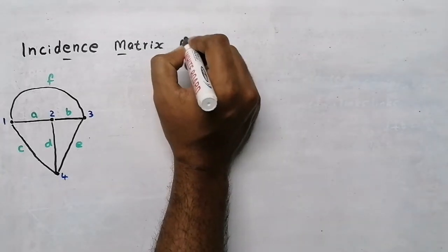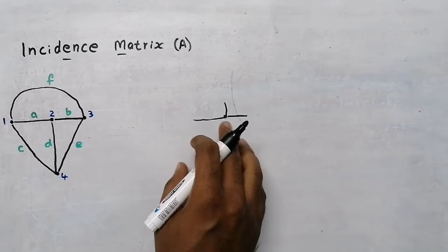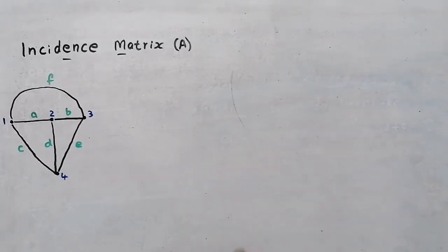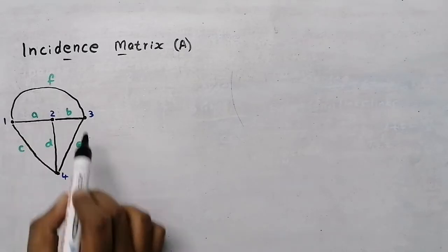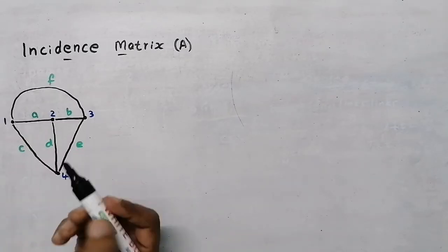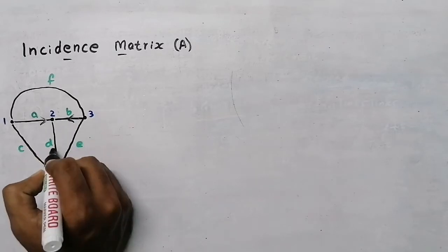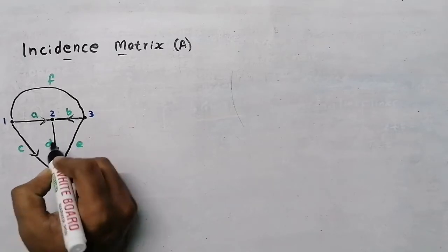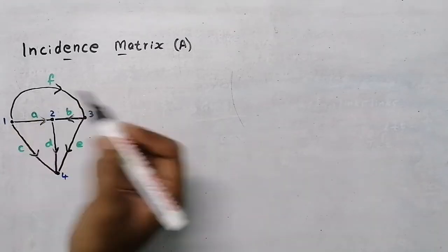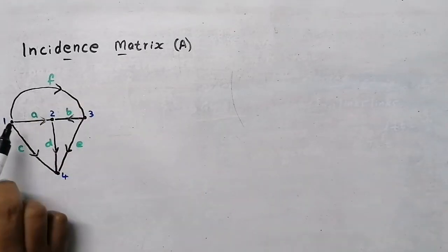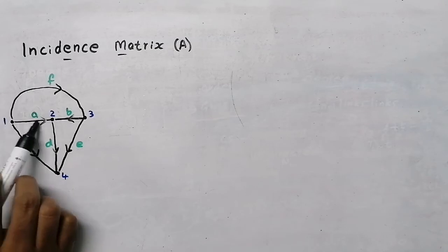Incidence matrix A is used to find the number of elements connected to a node. But for finding the incidence matrix we need a directed graph. This is an undirected graph — a directed graph means there will be directions, like arrow marks. These directions are based on the flow of current or the change in voltage. For example, a direction from node 1 to node 2 means current is flowing from node 1 to node 2.